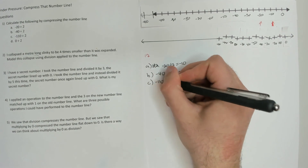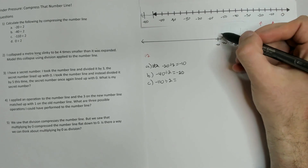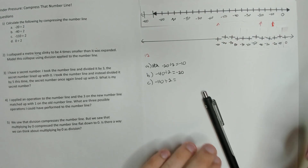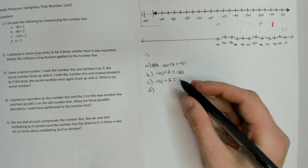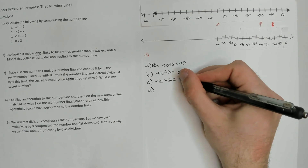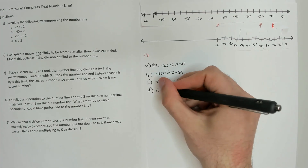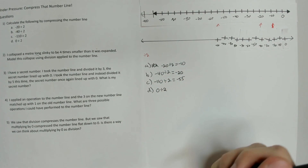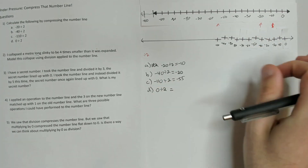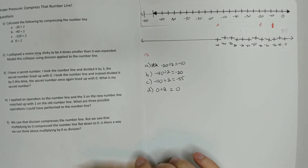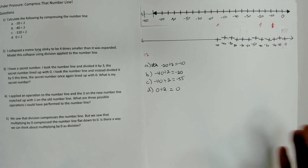Part C: negative 110 divided by 2. Negative 110 is right here, and that lines up with halfway between negative 50 and negative 60. What's between negative 50 and negative 60? That would be negative 55. So we get negative 55. Lastly, 0 divided by 2. We know that 0 split into two groups has to be 0, and we also see that 0 lines up with 0 since we fixed 0 when we compressed this. So 0 divided by 2 equals 0. That's question 1.